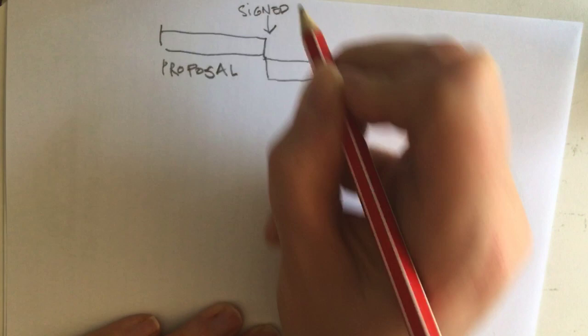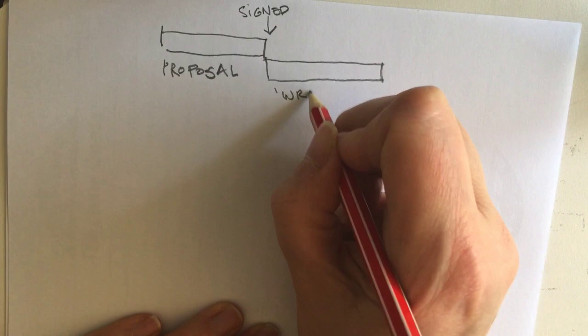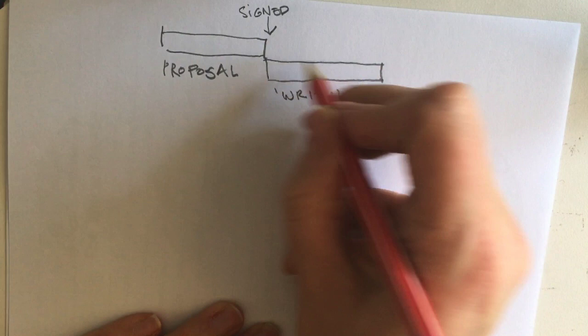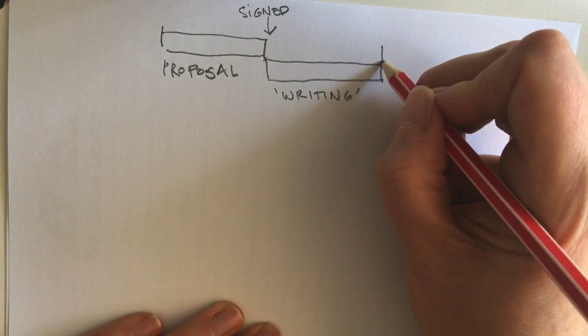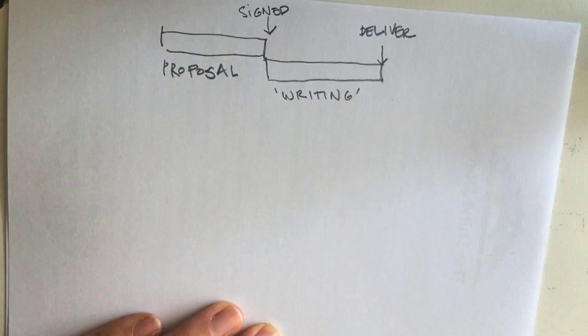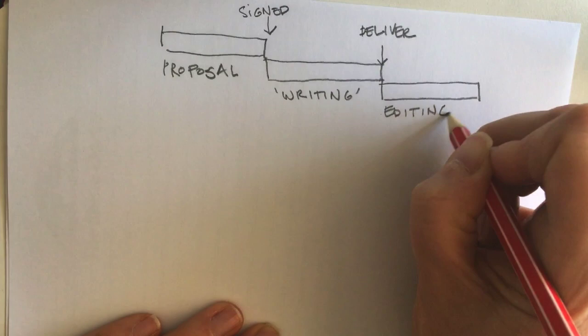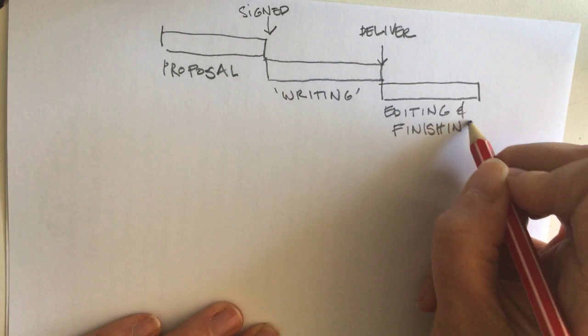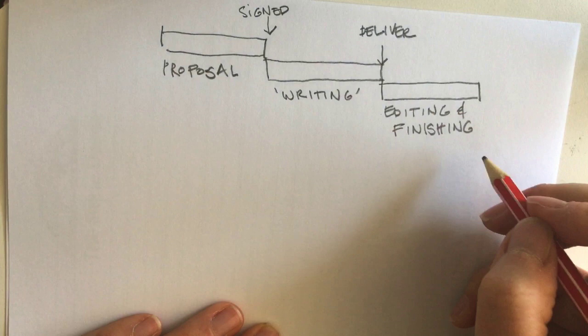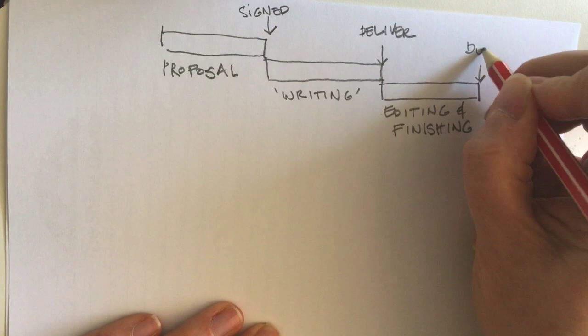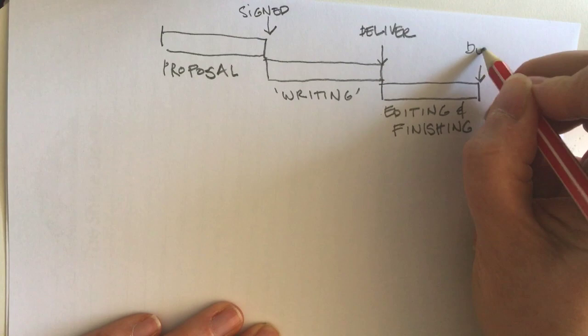Then you've got this stage where you're writing — inverted commas — because writing as we know is a back-and-forth process, sort of making things. So you could call this the making stage, but let's stick with writing. We know this is finished when we deliver a manuscript. And then this phase, which goes on always longer than everyone wants it to, which is the editing and finishing stage. In here you're sort of working with a copy editor, you're chasing up copyright things. There's a lot going on. How do you know this is finished? You get an email from your publisher and they give you a due date, and you only really know this is finished when the book is actually legit a thing.